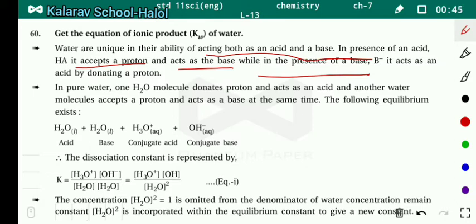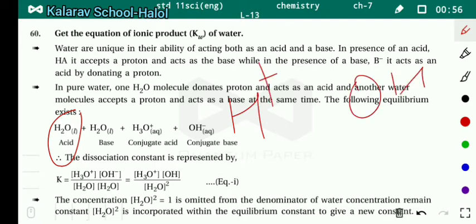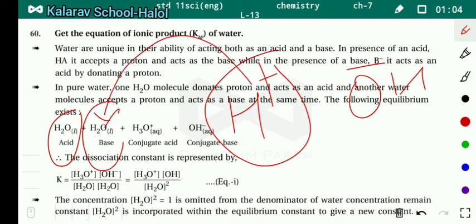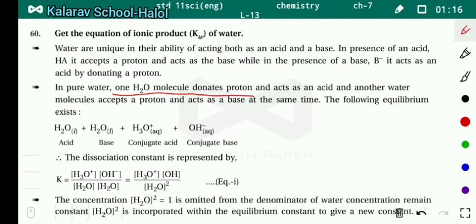In pure water, one H₂O molecule donates one proton. For example, H₂O plus H₂O: one H₂O converts into H⁺ and OH⁻, and this H⁺ is donated to the other water molecule. That other H₂O accepts H⁺ and therefore acts as a base. So one H₂O molecule donates a proton and acts as an acid, and another water molecule accepts a proton and acts as a base.